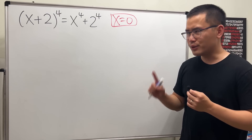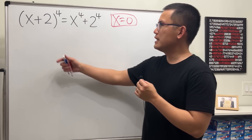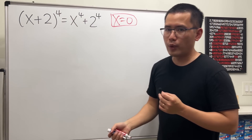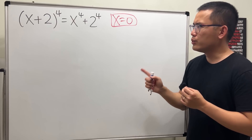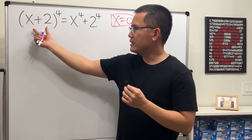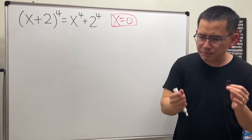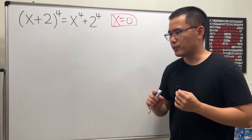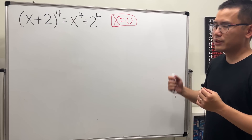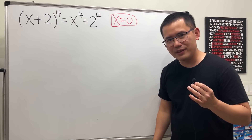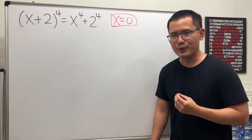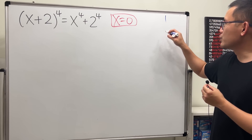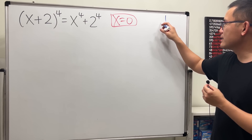The first step is we are going to multiply out the right way. I don't want to write out x+2 four times — that takes too long. I'll show you a secret weapon, and if you've been watching my videos, you already know it: Pascal's triangle.